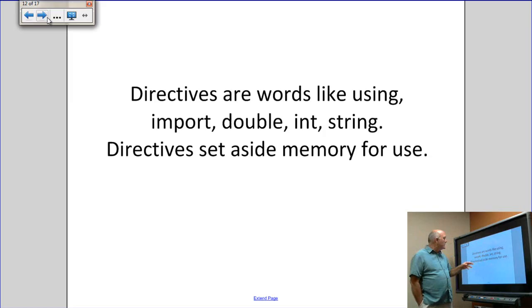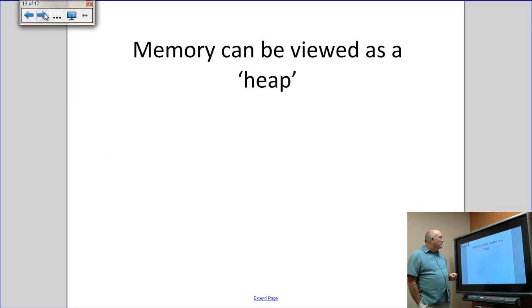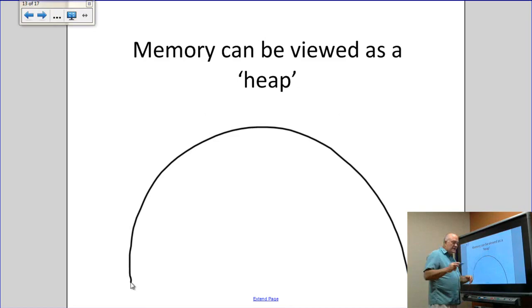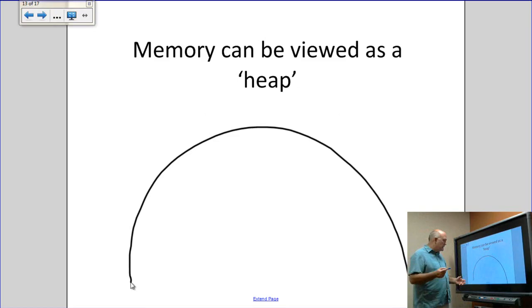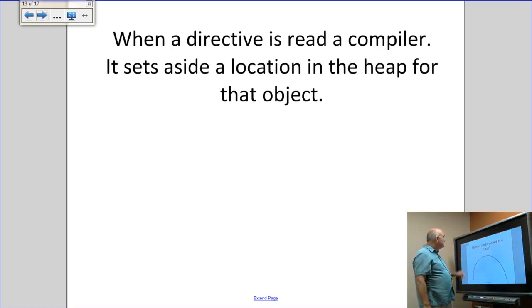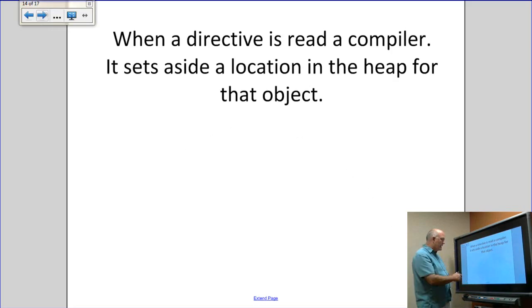Directives set aside memory for use. Memory can be viewed as a heap — basically a non-descriptive pile of data. It's bits and bytes that are just gathered up and placed there. There's really no definition to a heap; heaps grow and heaps shrink. When a directive is read by the compiler, it sets aside a location in the heap for that object.